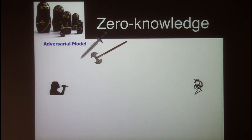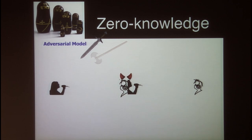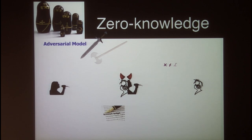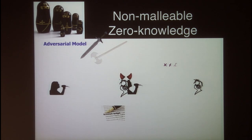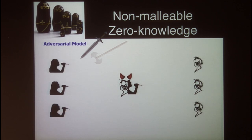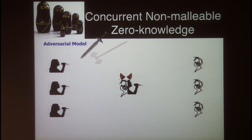With this being where we began, the later research naturally took to strengthening the model in various directions. Two of the important directions are: one, to allow the adversary to take the role of both the prover and the verifier simultaneously, so that he can garner more information from the left interaction and possibly use this in trying to prove an invalid statement in the right interaction.